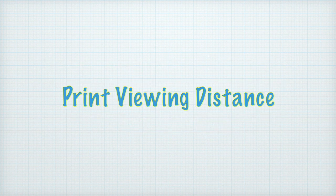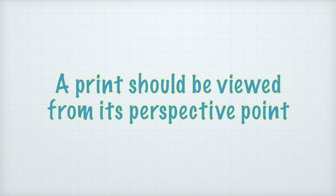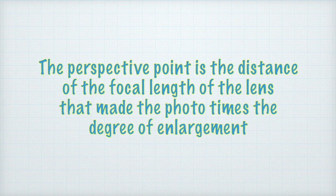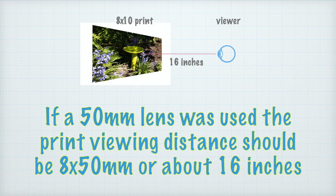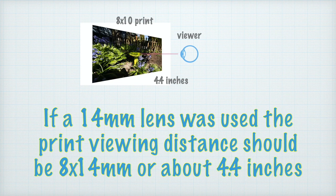Further complicating all this is print viewing distance. To get a normal view, you need to view a photograph from its perspective point so the eye has the same relationship to the objects in the photo that the lens had in the original scene. The perspective point is the focal length distance. When viewing an enlargement, the perspective distance is the lens focal length times the degree of enlargement. For example, an 8x10 print from a 35mm camera made with a 50mm lens has an enlargement factor of about 8x, so 8 × 50mm = about 16 inches — the print should be viewed from 16 inches away. If made with a 14mm lens, it should be viewed from only about 4.5 inches away.